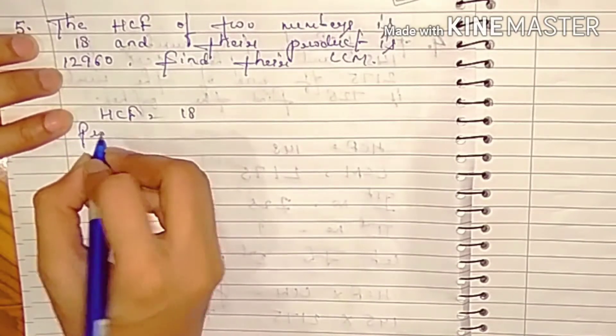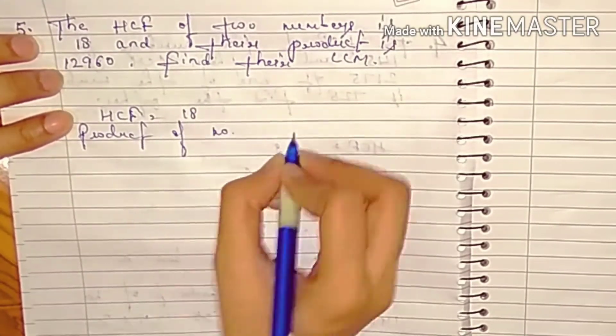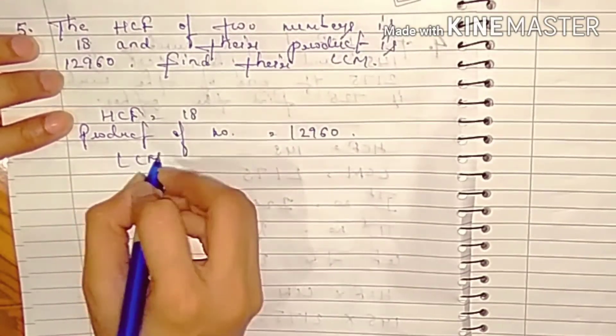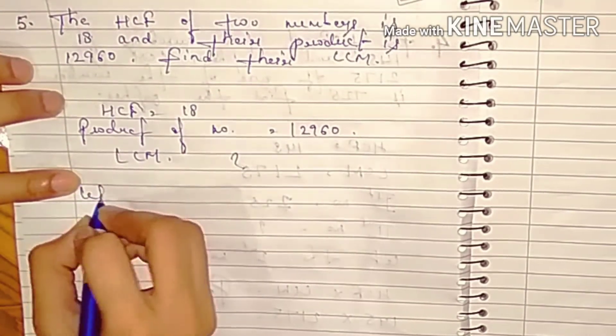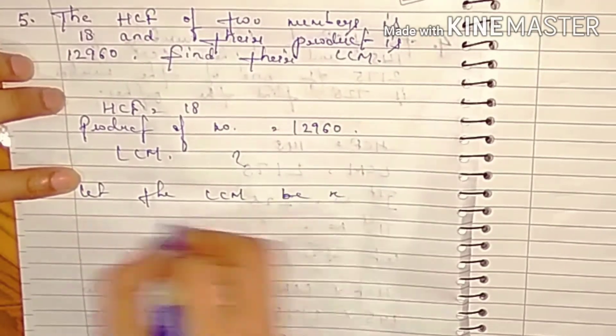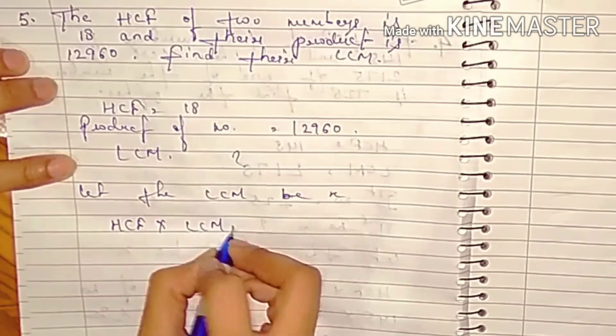Product of numbers is equal to 12,960 and LCM we need to find. So let the LCM be X. The formula here is HCF into LCM is equal to product of numbers.